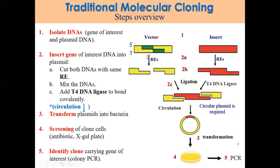Let us start on traditional cloning. Traditional cloning usually refers to the use of the same restriction enzyme (RE) to generate a DNA fragment with specific complementary sequences that can be joined together with DNA ligase before transformation. The step-by-step overview: we need to isolate the DNA — both the gene of interest and the vector — and then insert the gene of interest into the plasmid. We cut both DNAs with the same RE, mix them together, and then add T4 DNA ligase to bond them covalently.